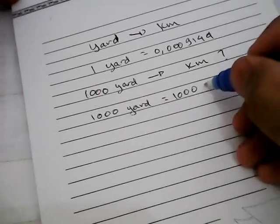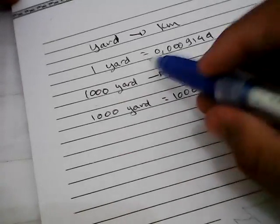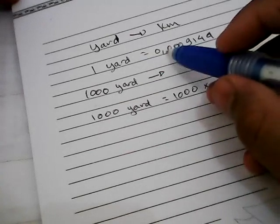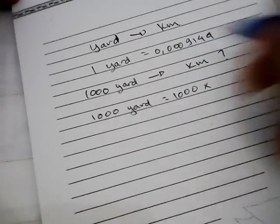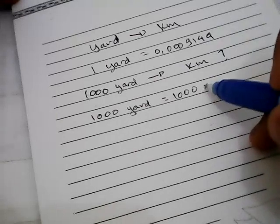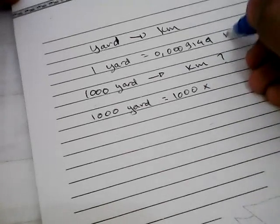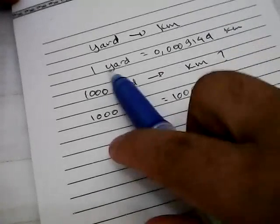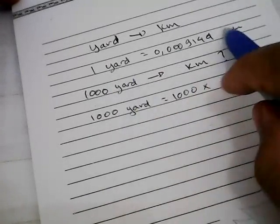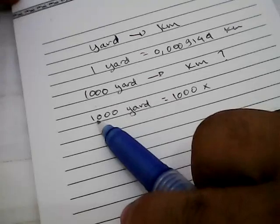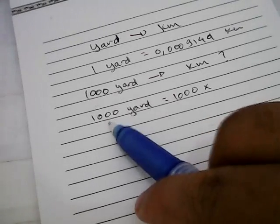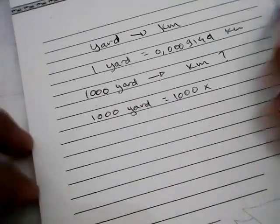I need to multiply this 1,000 with 0.0009144. We multiply with this number because we want to convert yards to kilometers, so we need to multiply 1,000 with this number.